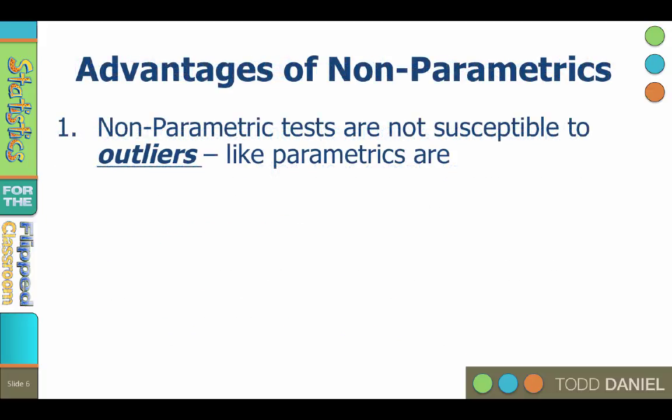Non-parametric statistics have several advantages over parametric statistics. First, non-parametric tests are not susceptible to outliers the way that parametric tests are. One outlier score can affect a parametric test by inflating the variance and hence the error term. This can invalidate a conclusion drawn by the parametric test, causing a type 1 error or perhaps even a type 2 error. Outliers in correlation can also change the direction or the strength of a relationship between variables. But non-parametric tests do not have this limitation, because they measure central tendency using ranked data.